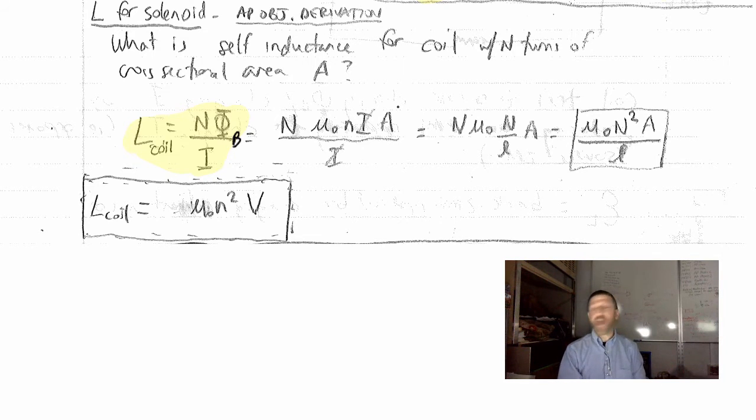That's the flux through the coil of area A. The coil has to have area A. This is the magnetic field right here, this is the area, that is flux and there's I. Notice that the I's cancel,